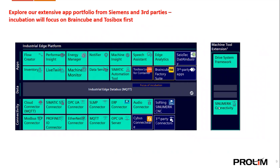The next slide explores the extensive app portfolio from Siemens and third parties, with incubation focusing on BrainCube and Tosibox. BrainCube specializes in data analytics and industrial IoT solutions, transforming data into actionable insights to help manufacturers optimize operations. Tosibox offers secure remote access solutions for industrial networks, with products such as Tosibox Lock and Tosibox Key designed to provide secure and straightforward remote connectivity for industrial control systems. In summary, BrainCube is centered around data analytics and Tosibox focuses on secure remote access.